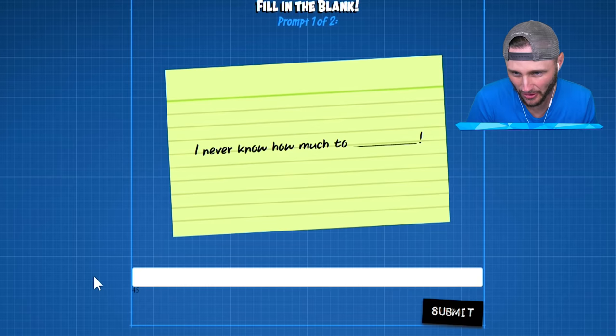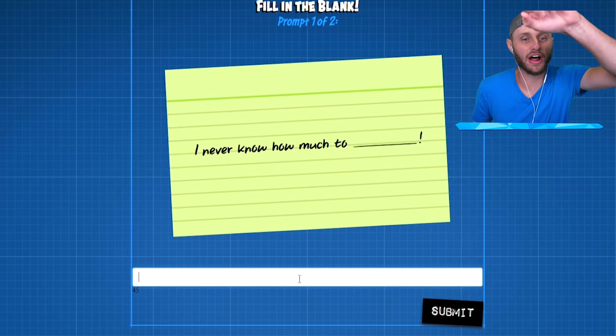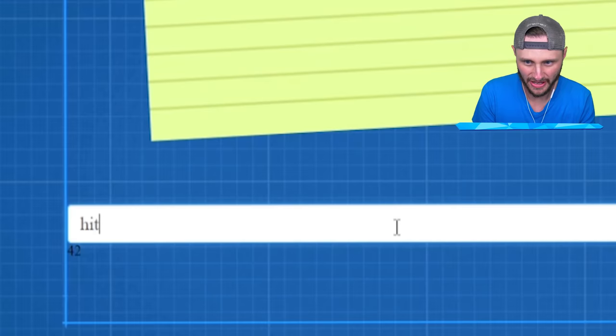We're creating a problem. I'm muting. Bye. I gotta mute. Okay, so I need to create two problems and then other people are gonna get these problems and they gotta create an invention. So my first problem. I never know how much to hit the like button.